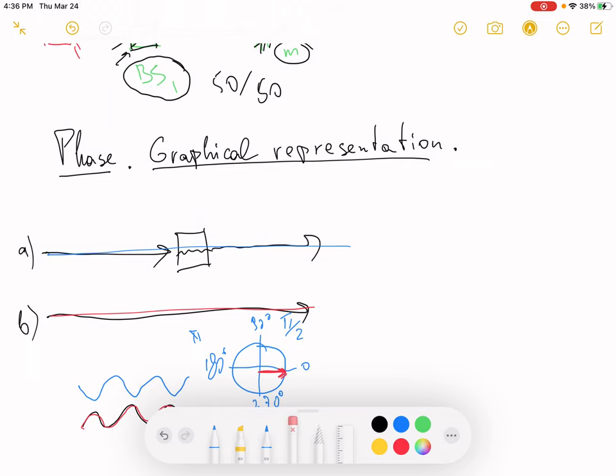How would the red wave look like on the graph? Think about it for a second, pause the video. It would look like a pi rotation. The waves are absolutely opposite to each other.